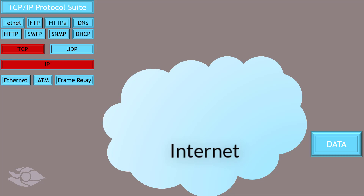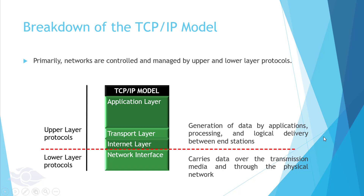Generally, networks are primarily managed by upper layer and lower layer protocols, and all models fit in this classification. The first three layers of the TCP/IP model focus on upper layer operations, and the bottom layer focuses on lower layer operations. Upper layers determine how data is generated, processed, and logically delivered between end devices, while the lower layer is concerned with how data is carried over the transmission media and through the physical network. This makes the standards used at the lower layer dependent on the size of the network and the technology used on it. The IEEE 802.3 standards define the lower layer operation of Ethernet on the local area network.